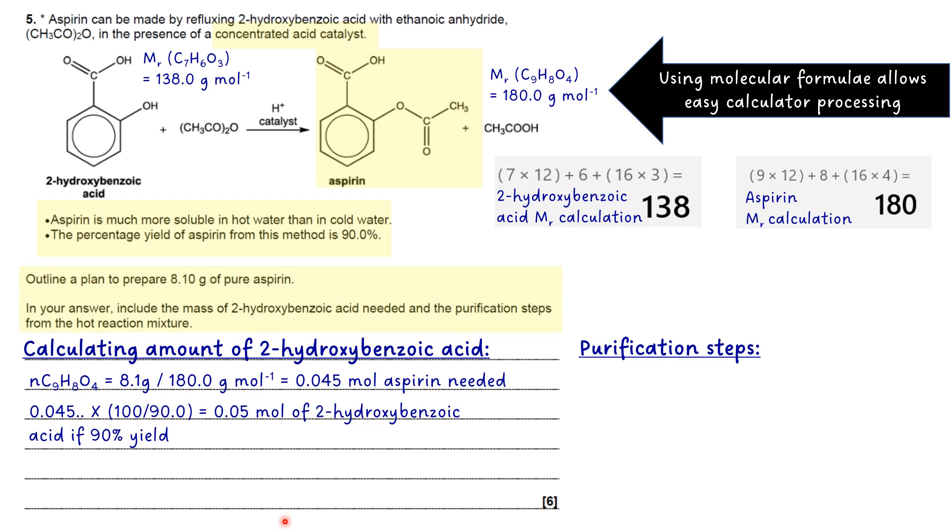If you do a little quick check in your head, 0.045 is roughly, or exactly, 90% of 0.05, isn't it? So that will clarify and reassure in your mind that you're on the right track. To work out the mass of 2-hydroxybenzoic acid, I take that number of moles and multiply it by the MR, and that gives me 6.90 grams.